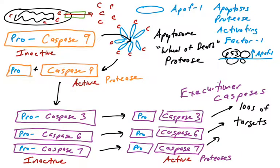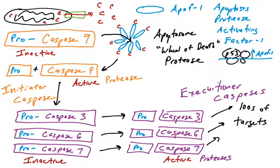Caspase-9 initiated the activation of the executioner caspases, so in the intrinsic pathway, caspase-9 is known as the initiator caspase. In the extrinsic pathway, there are different initiator caspases, but the same executioner caspases — caspase-3, -6, and -7 — which cleave hundreds of targets, destroying the proteins that lead to the collapse of the nucleus, cytoskeleton, and DNA.